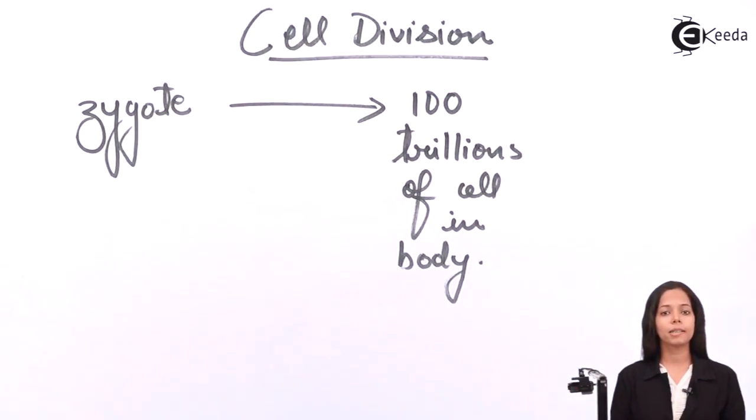Now let's understand what is the meaning of cell division. Before we understand what is the meaning of cell division, we need to be aware of two terms: one is called mother cell and another is called daughter cell. Now what is mother cell? Mother cell is a cell which undergoes cell division, and daughter cells are the cells which are formed after division of mother cell.